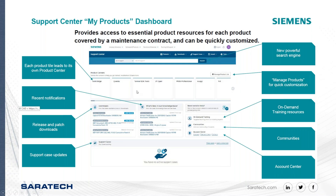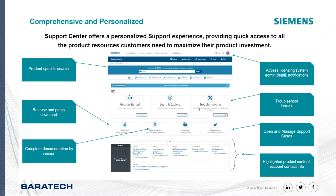You can also manage your products — turn product tiles on and off as needed. I personally have about 30 products on my screen but can filter to only show certain ones using Manage Products. There's also on-demand training — if you have a membership for on-demand training to the Accelerator Academy, that will appear here. The new support center offers a personalized support experience, with your initials or picture at the top of the page.